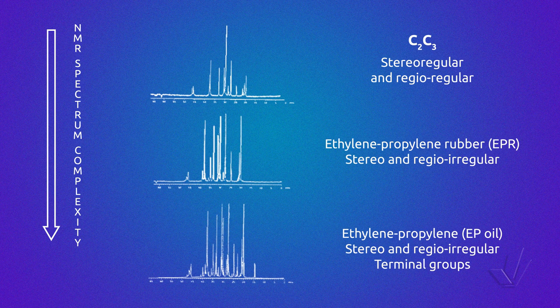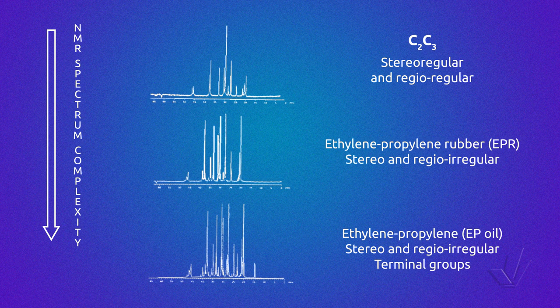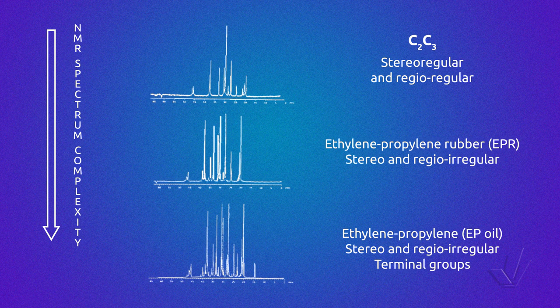In this figure, three carbon-13 spectra can be seen. The first one is of a stereoregular ethylene-propylene copolymer. The second one is from an ethylene-propylene rubber that is stereo- and regio-irregular. The last one is from an oil, where besides the resonances due to irregularity, terminal groups can also be detected. We are now going to apply the equations we have seen to vinyl copolymers.